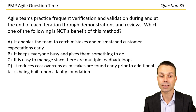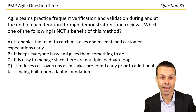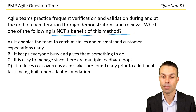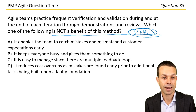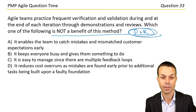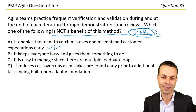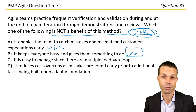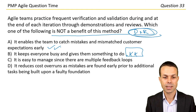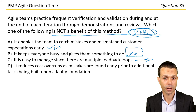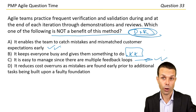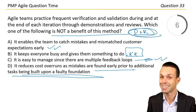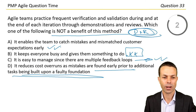Agile teams practice frequent verification and validation during and at the end of each iteration through demonstrations and reviews. Which of the following is not a benefit of demos and reviews? Options: it enables the team to catch mistakes and mismatched customer expectations early; it keeps everyone busy; it's easy to manage since there are multiple feedback loops; and it reduces cost overruns as mistakes are found early prior to additional tasks being built on a faulty foundation.